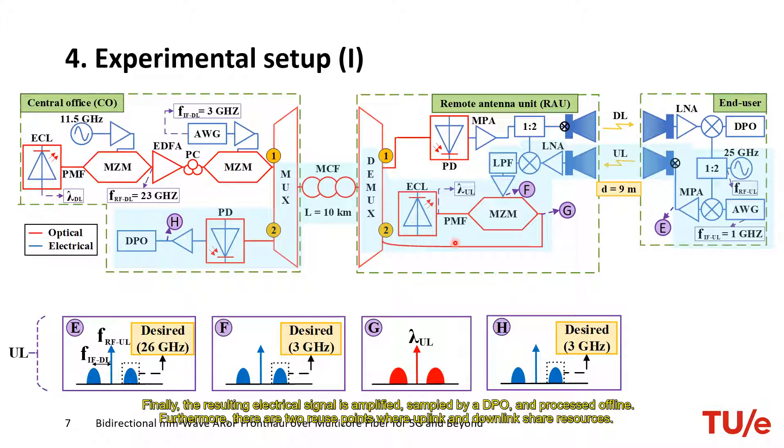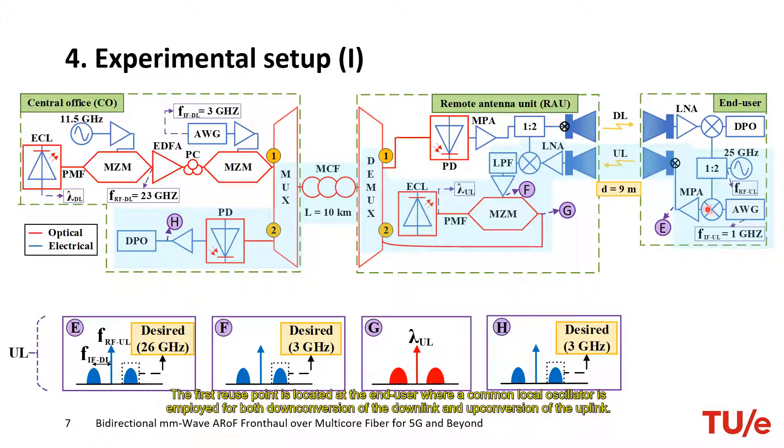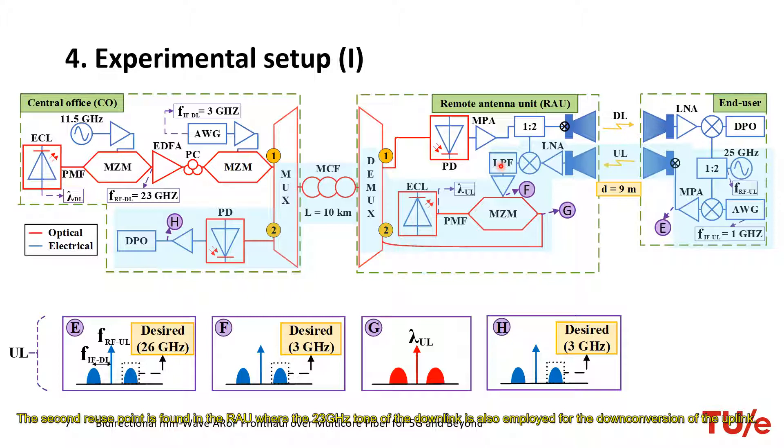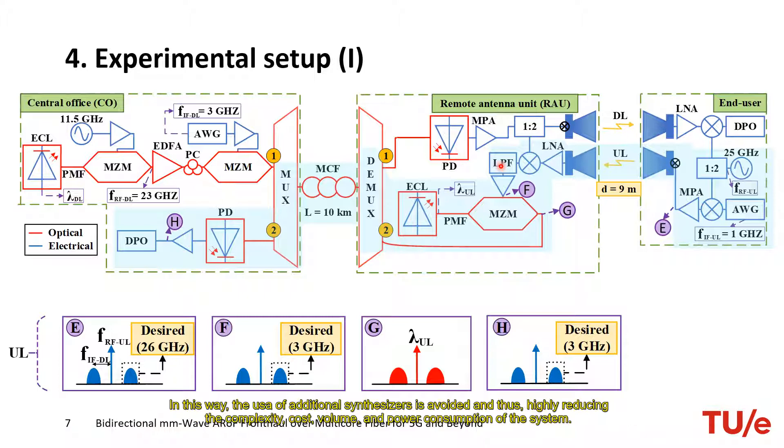Furthermore, there are two reuse points where uplink and downlink share resources. The first reuse point is located in the end user where a common local oscillator is employed for both downconversion of the downlink and upconversion of the uplink. The second reuse point is found in the remote antenna unit where the 23 GHz tone of the downlink is also employed for the downconversion of the uplink. In this way, the use of additional synthesizers is avoided and thus highly reduces the complexity, cost, volume, and power consumption of the system.